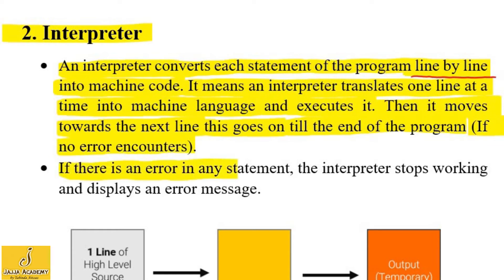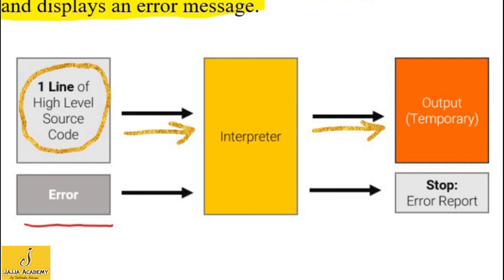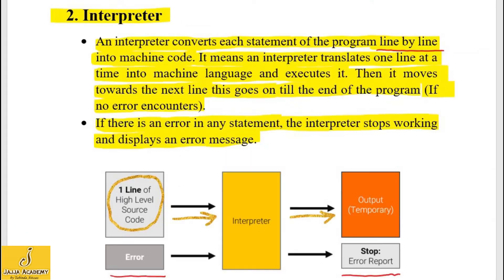If there is an error in any statement, the interpreter stops working and displays an error message. One line of high-level source code is given to the interpreter, and it produces a temporary output if there is no error in that line. But if there is an error in the statement, the interpreter stops and reports the error. The error from the first line has to be removed before moving to the next line. This is the working of an interpreter.